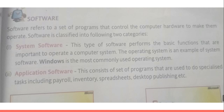The other type of software is application software. Application software are programs which are developed for a particular purpose. For example, you use a word processor such as Word for typing a document.